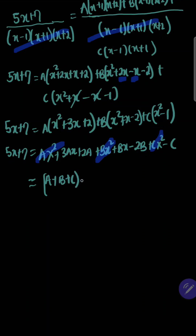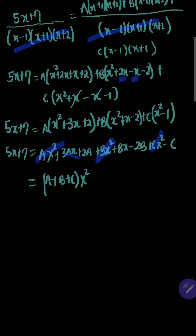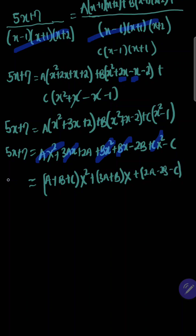Collecting the coefficient of x²: we have A plus B plus C all having x². Then moving to the coefficient of x, we have 3A plus B times x. And lastly, those without an x coefficient: 2A minus 2B minus C.